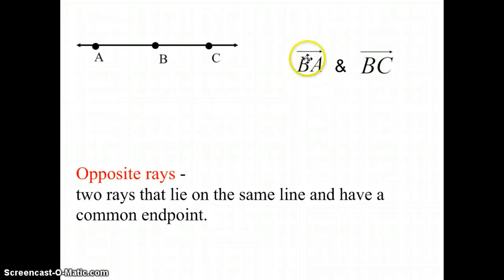Please be careful. See that BA, even though ray BA starts here and goes here, you still put the symbol going to the right. And ray BC starts here and goes this way. Because they're on the same line and have the same endpoint, they're what we call opposite rays.